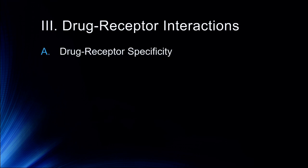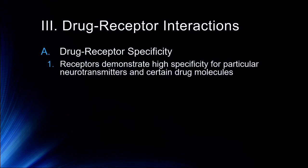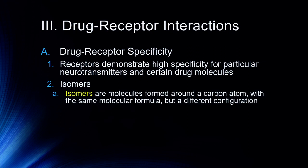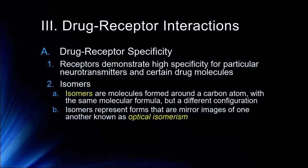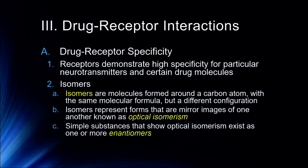Some important drug-receptor interactions to consider include drug-receptor specificity. Receptors demonstrate high specificity for particular neurotransmitters and drug molecules, primarily due to the three-dimensional structure of the drug and receptor — like a lock and a key. Important to understand are optical isomers of different drugs. Isomers are molecules formed around a carbon atom with the same molecular formula but in a different configuration — all the same pieces, just put together differently. Isomers that are mirror images of one another are called optical isomers, and they exist as one or more enantiomers.